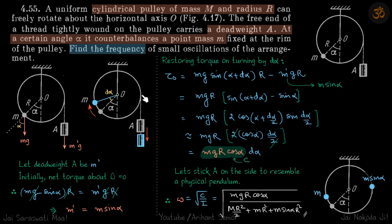To calculate i now, let's attach this mass a to this side like this. This is m dash, which is m sin alpha.